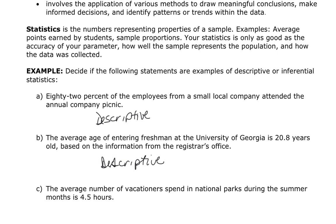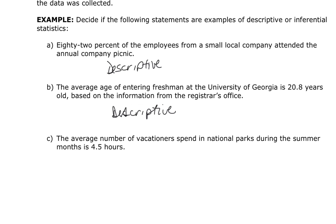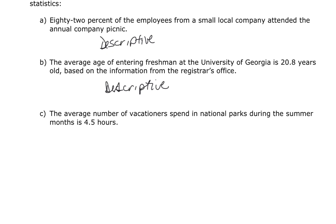This next one: the average number of hours vacationers spent in national parks during the summer is 4.5 hours. To me this feels more like inferential. They made a conclusion based on some sample they chose, because they're saying that across all national parks during the summer the average is 4.5 hours for all national parks. So this feels like it's more inferential.